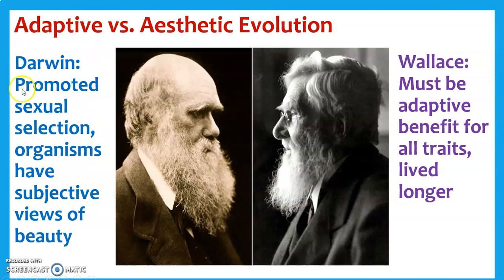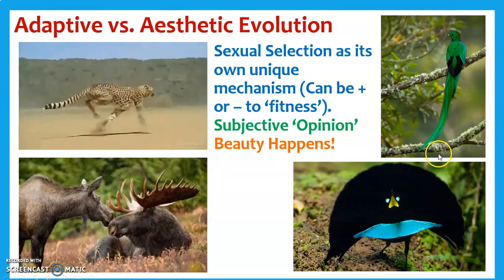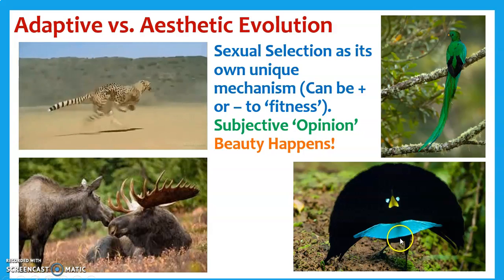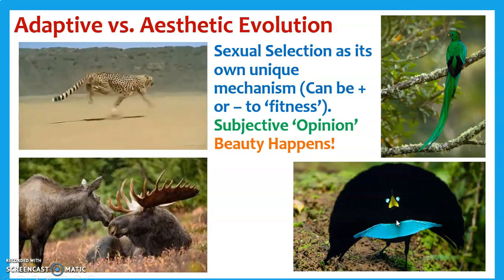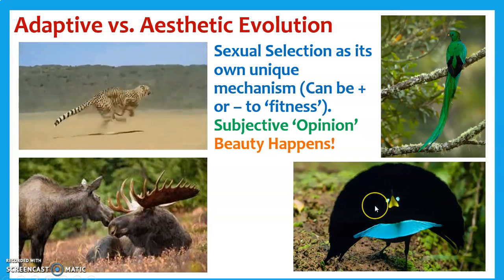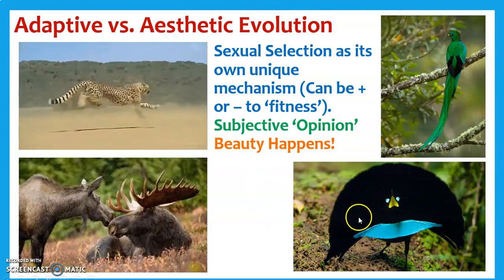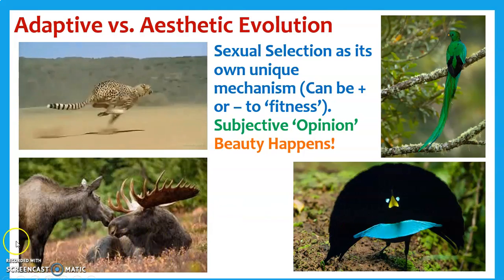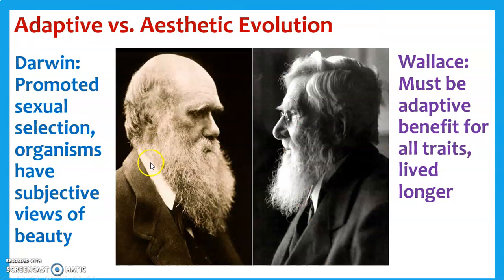Darwin would say sexual selection is a unique mechanism that sometimes correlates with adaptive evolution. Wallace and everyone after him said there's got to be a reason — as far as personal fitness, fitness of the offspring, or even the female — and it's not just due to this subjective idea of the female saying 'I like this, so I'm selecting for that.' That's why Darwin's idea got kind of shoved under the rug. Wallace promoted his idea, and sexual selection got incorporated into adaptive selection, pretty much still like today.